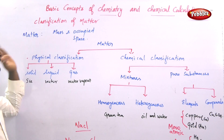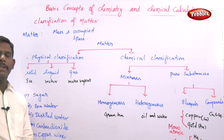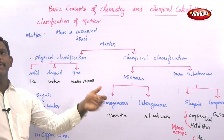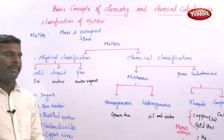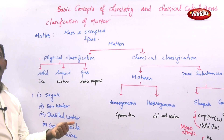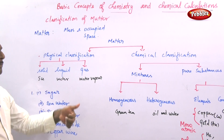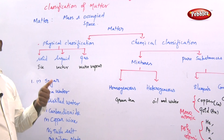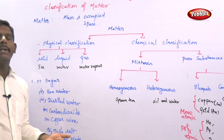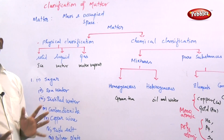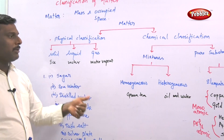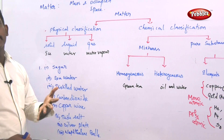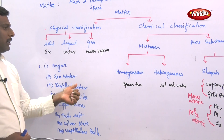So this is the classification of matter. Next, evaluate yourself: classify the following based on the chemical classification of matter — whether it is a compound, mixture, or element. For example, sugar: what category is sugar? It is a chemical compound. The next is sea water: in sea water, different salts and water are present — different compounds are present — so sea water is considered to be a mixture. Sea water contains different elements like magnesium, sodium, and sodium chloride.